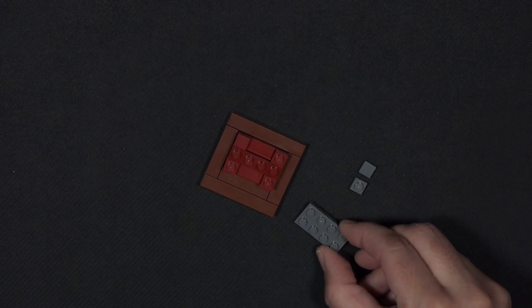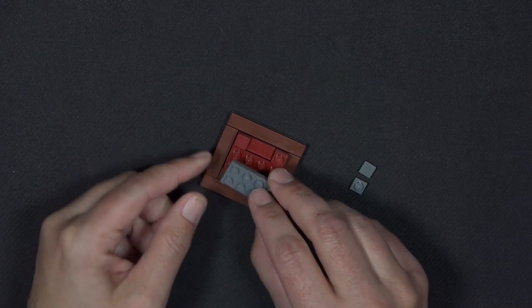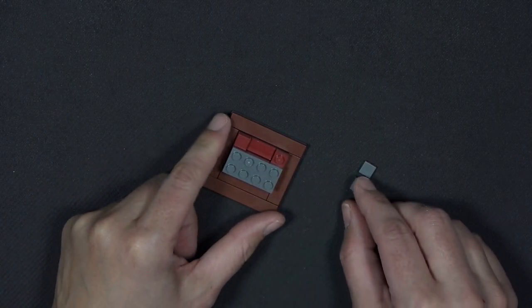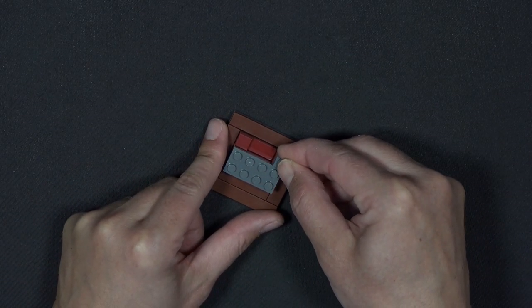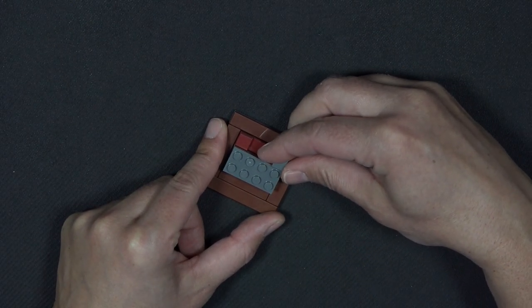Next I have a 2x4 plate in the dark bluish gray, and that sits like this. And then a 1x1 plate here, and a 1x1 tile on top of that plate.